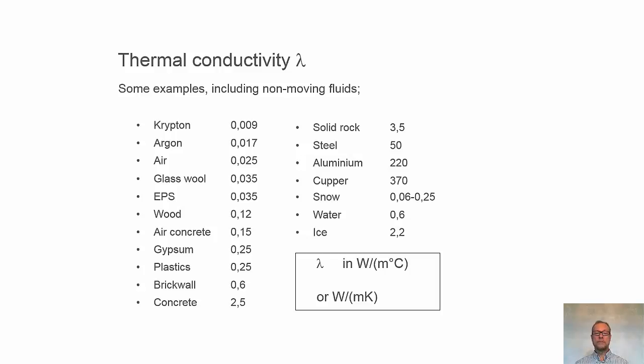We see brick wall, concrete, stone materials with quite high thermal conductivity. Solid rock, very high. And then metals like steel and aluminum and copper have very high thermal conductivity.